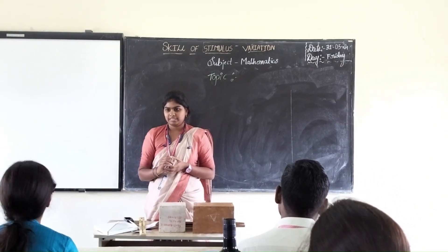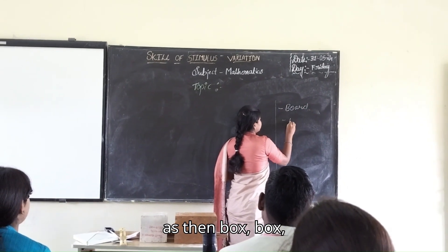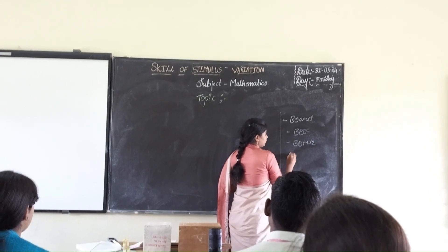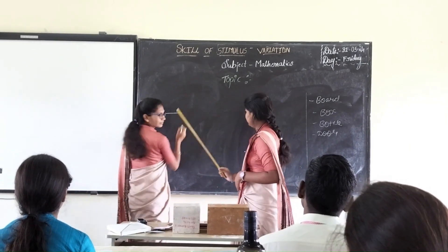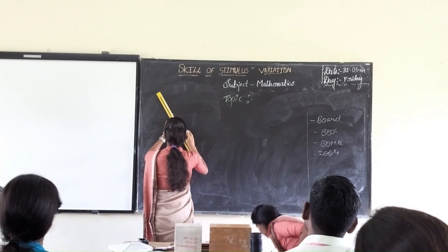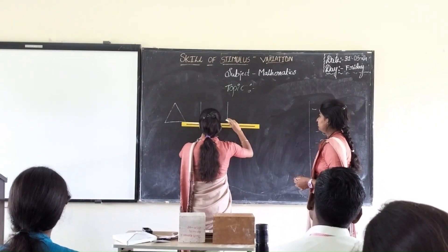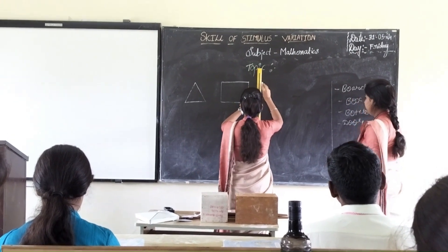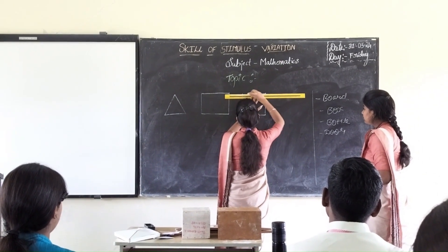Give me an example for an object. Balls. Balls — balls is in the shape of? Rectangle. Then? Box. Book. Bottle. Fine, it's enough. Thank you.